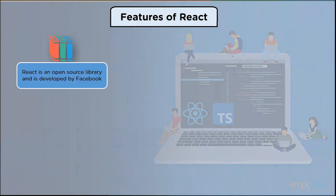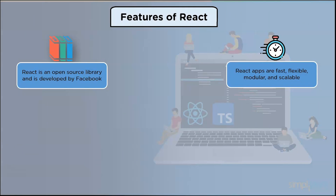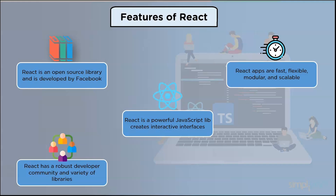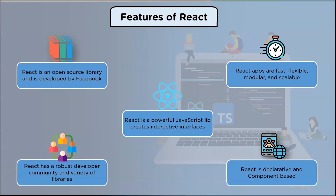React is an open-source library developed by Facebook. React apps are fast, flexible, modular, and scalable. React is a powerful JavaScript library that creates interactive interfaces. Popular libraries of React are Redux, Material Design, and Jest. Redux helps manage state in JavaScript and is the most popular React library because it easily tracks state as the application size grows. React has a robust developer community. React is declarative and component-based — declarative views make the code more predictable and easier to debug. React lets us build encapsulated components that manage their own state and compose them to make complex UIs.